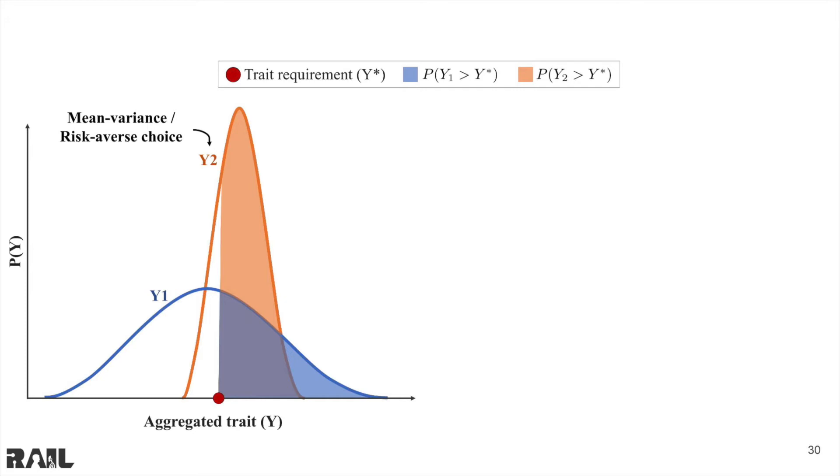In this case, both a risk-neutral and risk-averse allocation algorithm would produce the allocation for Y2. And further, because Y2 has a larger probability of satisfying the trait requirements, our method would also choose Y2.